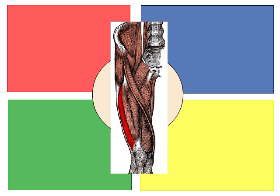The vastus lateralis is one of four muscles that make up the quadriceps femoris muscle group, which is found on the anterior surface of the thigh and creates motion at the knee.